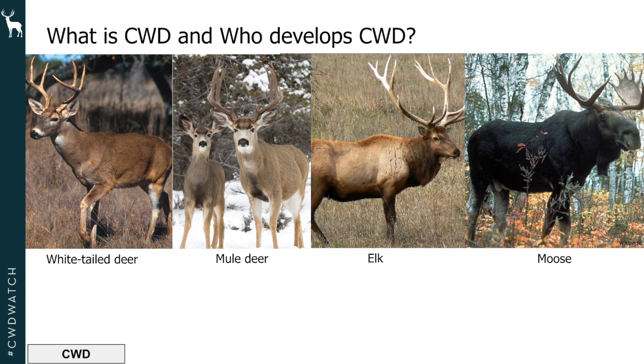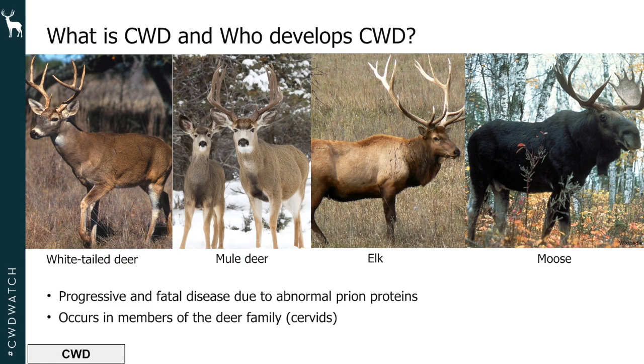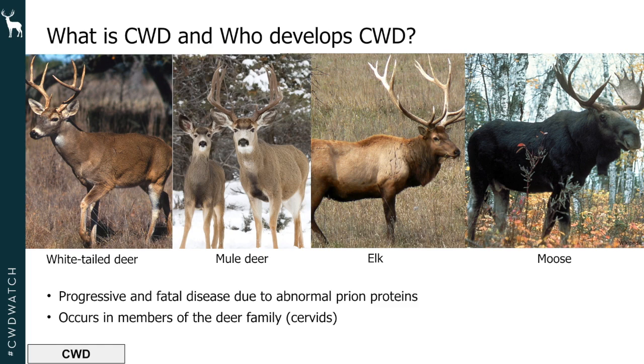What is CWD? It is a progressive and fatal disease due to abnormal prion proteins — misshapen or misfolded proteins. It occurs in members of the deer family, often called cervids. Examples include white-tailed deer, mule deer, elk, and moose — representatives of the deer family that you might see in Minnesota or surrounding states and Canadian provinces.